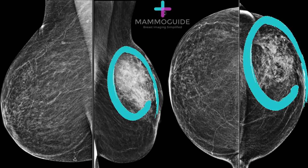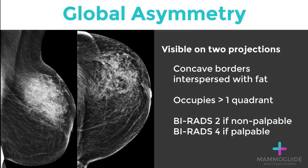A standard screening mammogram demonstrates a global asymmetry in the upper outer quadrant of the left breast. Global asymmetries are visible on two projections and have concave borders interspersed with fat. The difference between a global asymmetry and a focal asymmetry is that a global asymmetry occupies more than one quadrant. Global asymmetries are often due to normal anatomic variation. If they are non-palpable, this can safely be given a BI-RADS category 2. However, if it is a palpable abnormality, further evaluation with ultrasound and likely a biopsy is recommended.